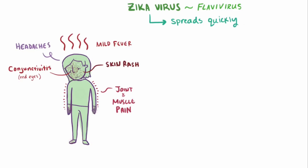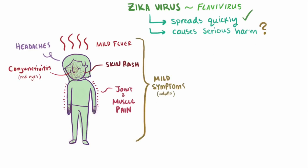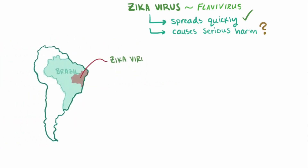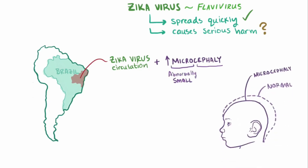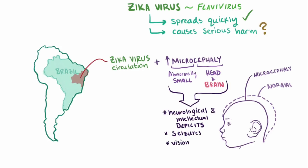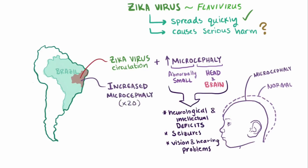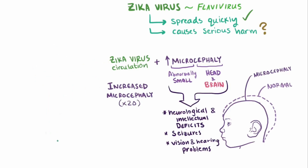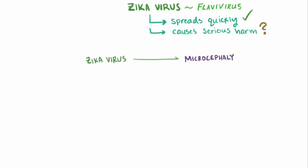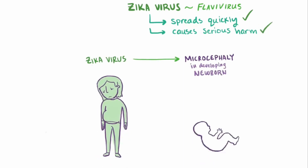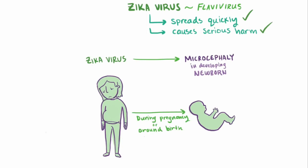Although Zika causes mild symptoms in adults, there's more to the story. In October 2015, in areas of Brazil where Zika virus had been circulating quite a bit, public health officials noticed a significant increase in babies born with microcephaly, which is when a child is born with an abnormally small head and therefore abnormally small brain size. This has the tendency to cause serious neurological and intellectual deficits, seizures, as well as vision or hearing problems. There was a huge increase — up to a 20-fold increase — among Brazilian states with Zika virus outbreaks. As of November 2015, the European Center for Disease Control stated that it's plausible that the Zika virus is able to cause microcephaly in the developing fetus or newborn, as the Zika virus can be transmitted from mother to baby during pregnancy or around the time of birth, although it's not really known how often this happens or how exactly the Zika virus is linked to microcephaly.